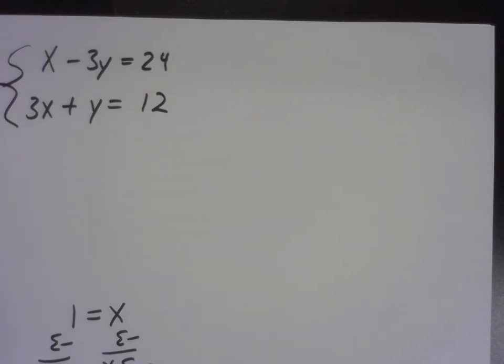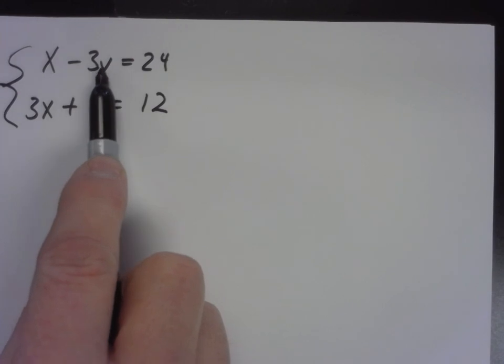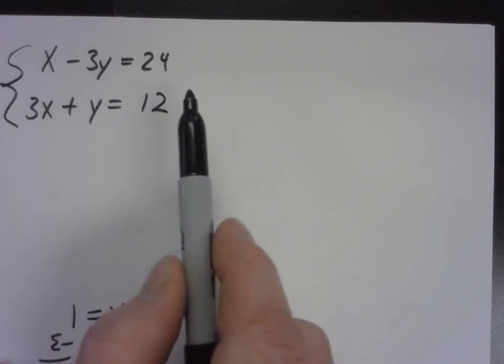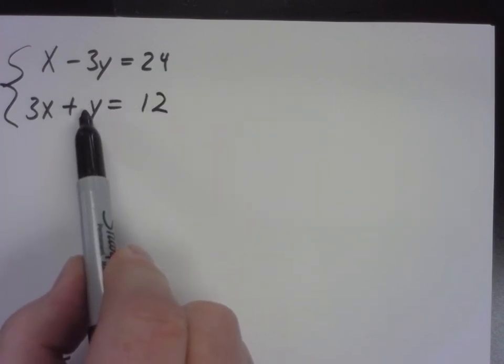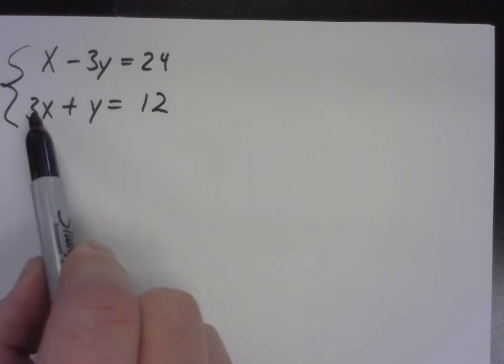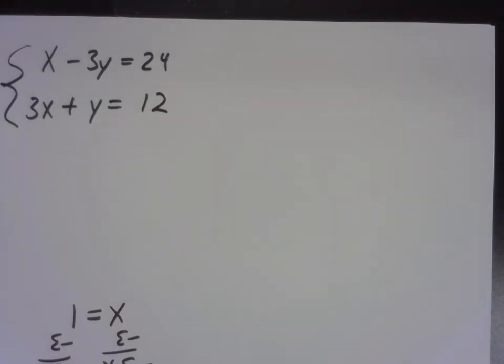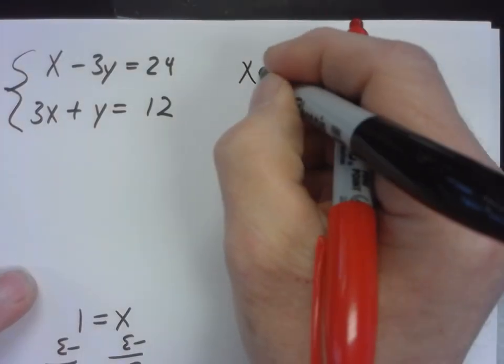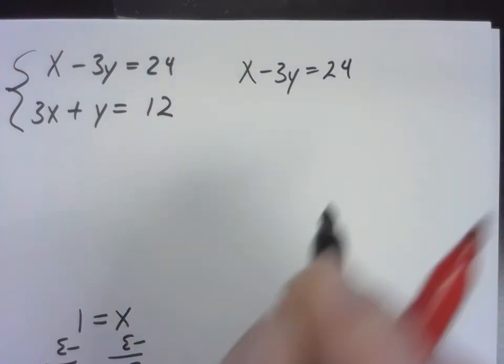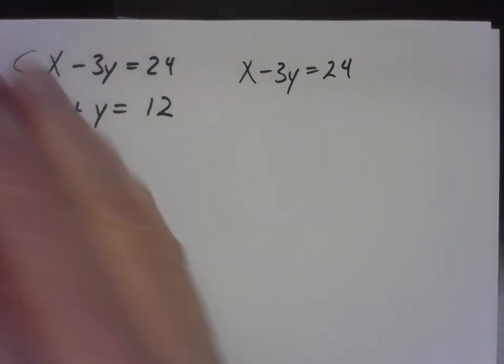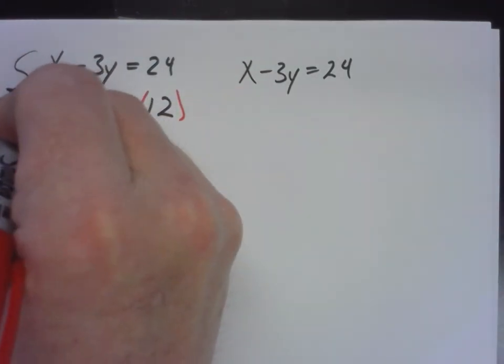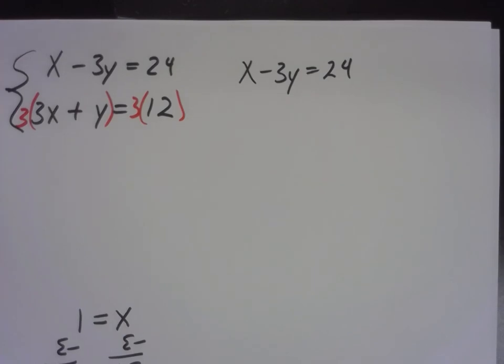I'm looking at the y's here. They already have opposite signs, which is good. They need to have opposite signs. If there were some way I could make that one a 3y. So what that means is I'm going to leave the top equation alone. On the bottom equation, I'm going to multiply both sides of the equation by 3. So that means every term on both sides has to be multiplied by 3.